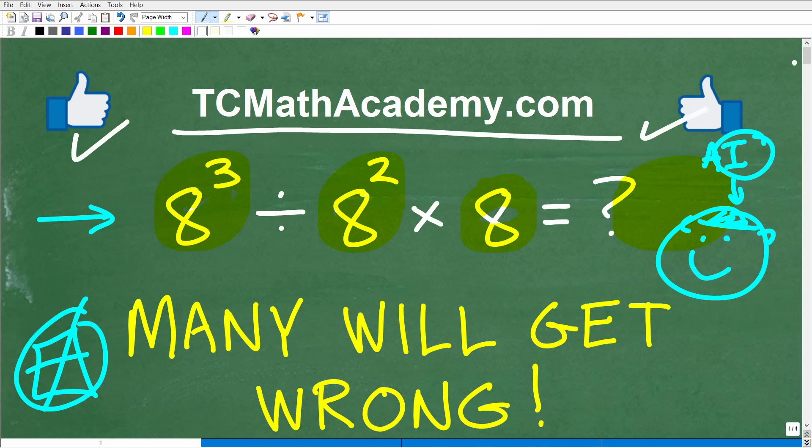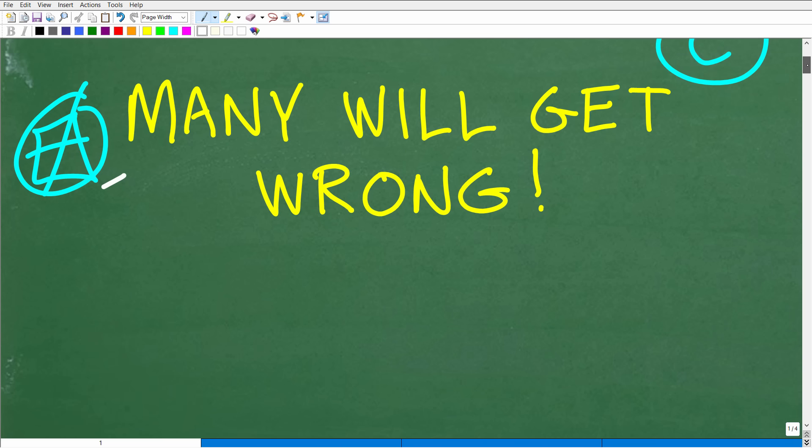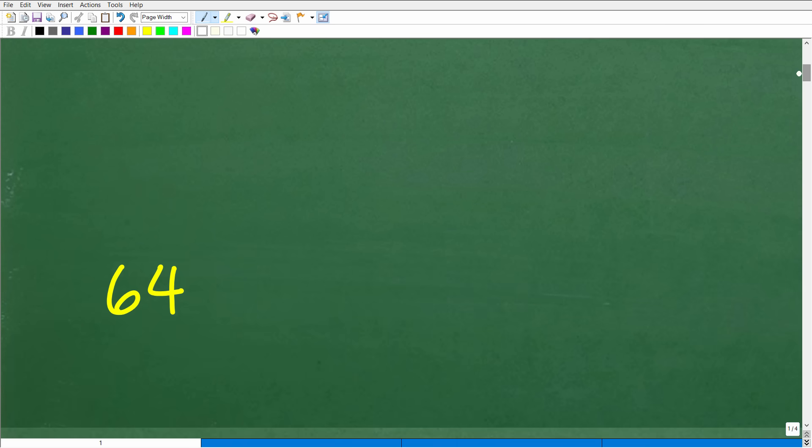Okay, so let's go ahead and take a look at the actual answer right now. We have 8 cubed divided by 8 squared times 8. Again, no calculators. What is the answer? Well, here it is. The correct answer is 64. Okay, so how'd you do?